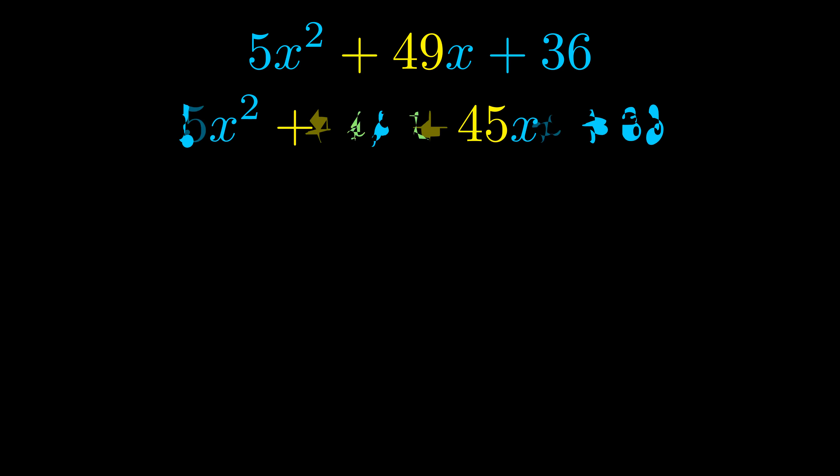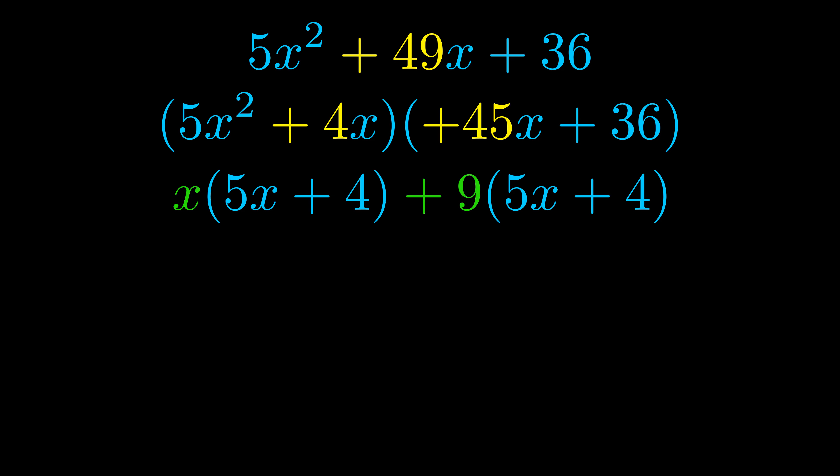Once we've done this we go ahead and we put parentheses around the first term and the last term and we do that so that we can take the greatest common factor out of both terms. We can see the greatest common factor is now outside in green.